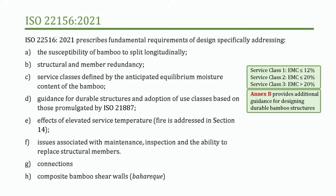We've used service classes — typical ISO or Eurocode service classes based on equilibrium moisture content. We've got a lot of guidance for durable structures as well. Durability is a big issue, especially if you want your structure to last 50 years. Effects of elevated service temperature are addressed, fire is also addressed briefly, and there are issues of maintenance, inspection, and replacing members.